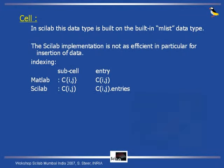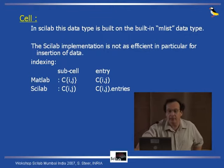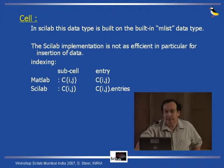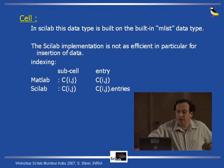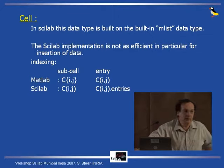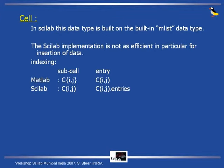In Scilab, to build higher-level objects, one may use the Scilab built-in 'mlist'. And for compatibility with MATLAB, we have emulated the MATLAB cell array using this data type, though this may change over time. In MATLAB, when you want to get the i-th element of C, you have to use curly brackets. In Scilab, this can be done using regular parentheses for subcell indexing. And if you want to get the element itself, in MATLAB you use parentheses, and in Scilab, parentheses followed by the entry field.